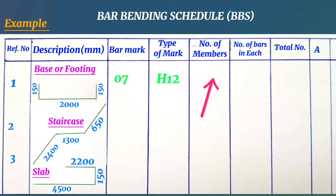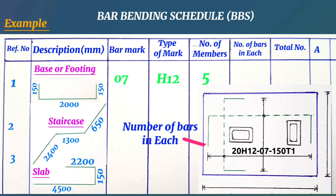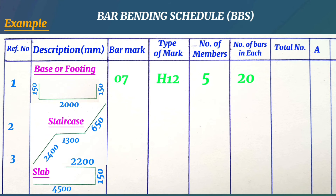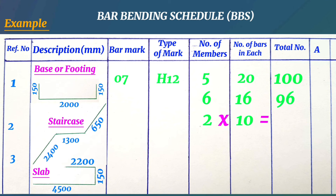The number of members column is where the tables from steps 1, 2, and 3 help us — for example, 5 footings of F2 means we write 5 here. If we have 3 columns of C2, we write 3 under number of members. Under number of bars in each, we write the count of bars shown in the drawing. To get the total number, we simply multiply number of members by number of bars in each. For example, 6 footings each with 16 bars gives 96 total, and 2 footings each with 10 bars gives 20 total.